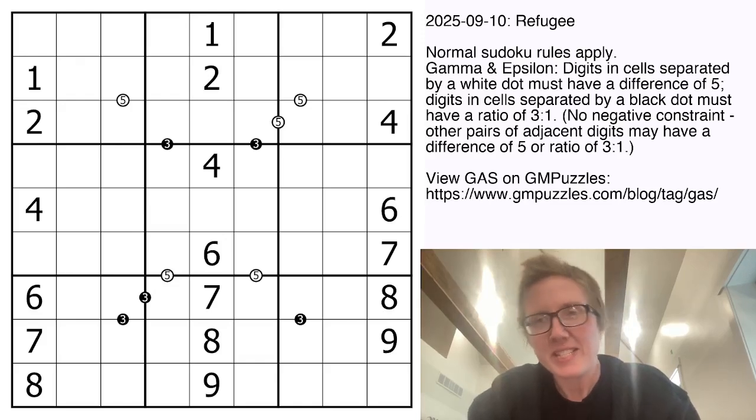Hello, my friends. I'm Clover, and this is Genuinely Approachable Sudoku. And today, we are solving Refugee by Philip Newman.